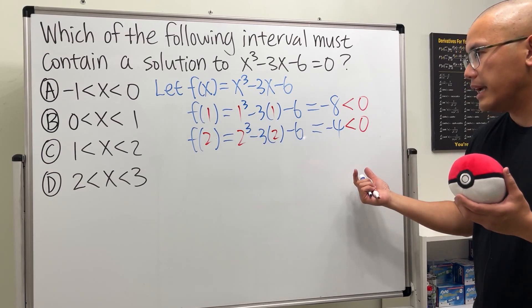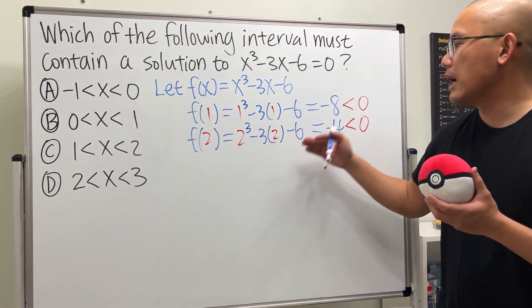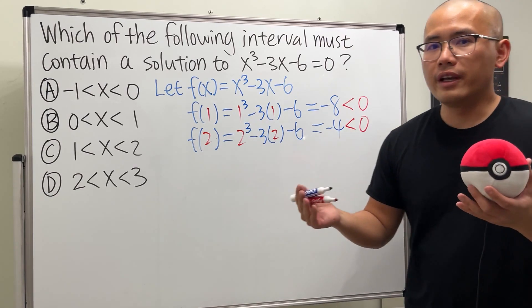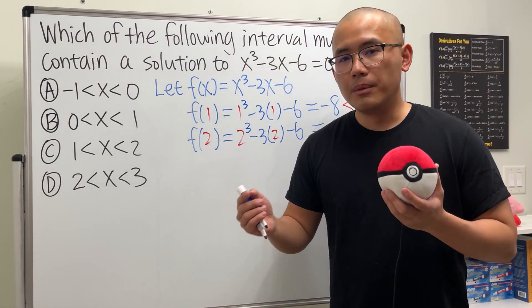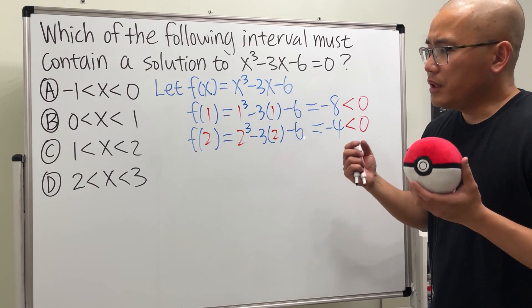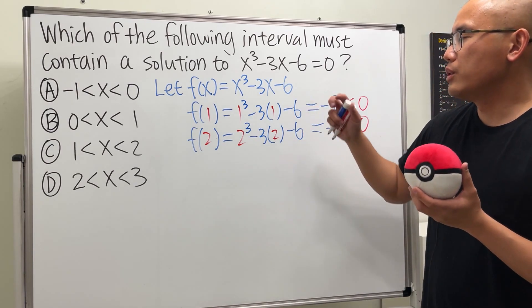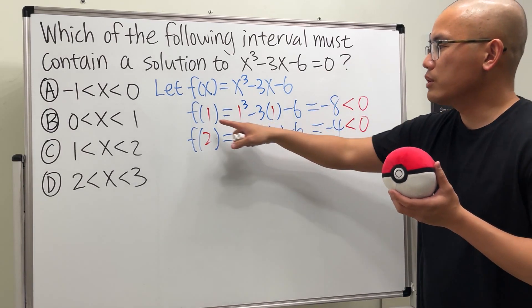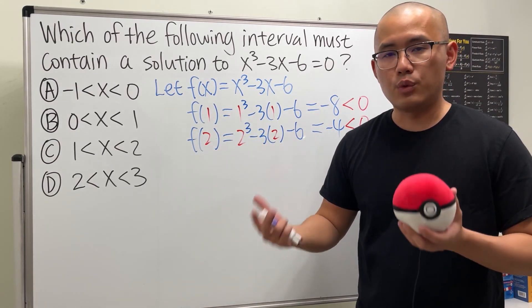If this is the case, we see that the value of the function at the endpoints are both negative. We cannot draw any conclusion. Because even though it could have an answer, right, it could be in between 1 and 2, but we cannot guarantee.